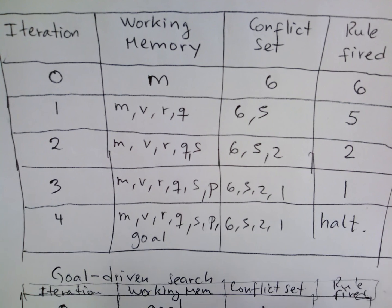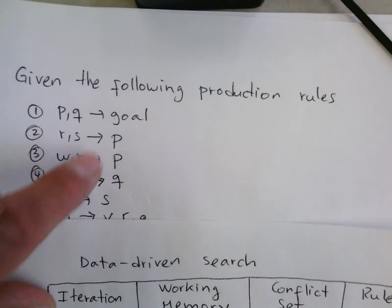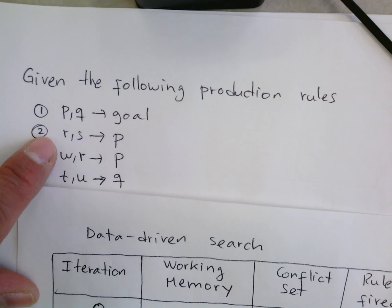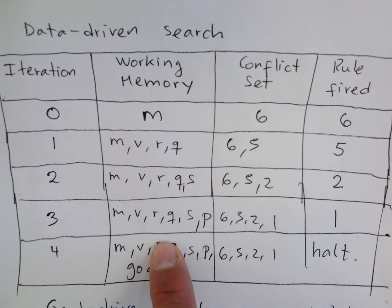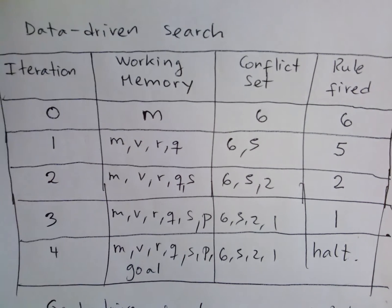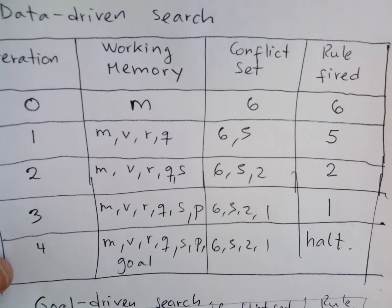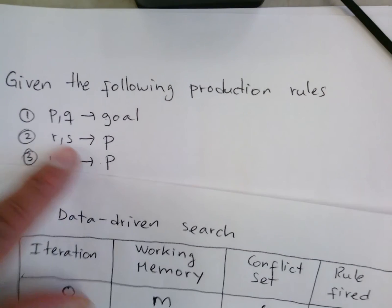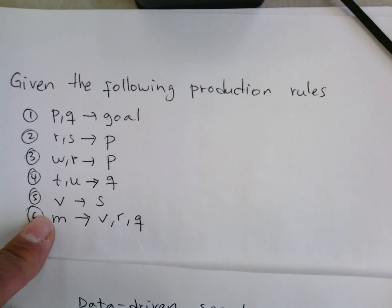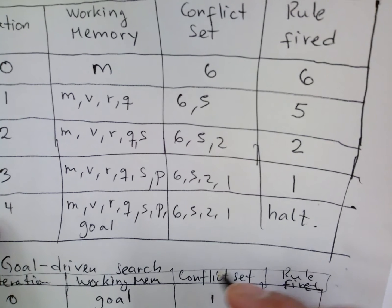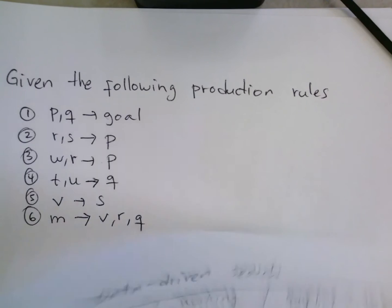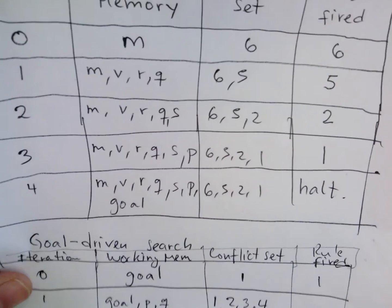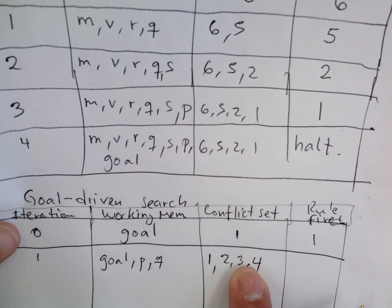For goal, P, and Q: goal matches rule one, P gets matched by rules two and three, and Q is matched by rule four. The key difference here is that in goal-driven search we look for matches on the right-hand side of the productions, whereas in data-driven search we looked at the left-hand side. The conflict set is now rules two, three, and four.